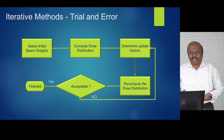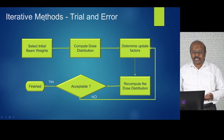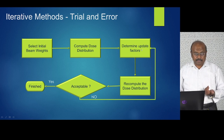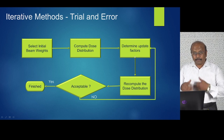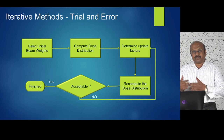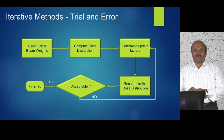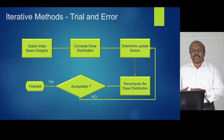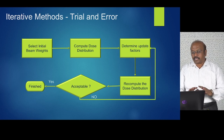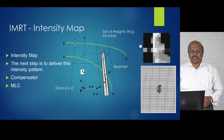The iterative method works like this: you initially take some weights, compute the dose distribution, determine the update factors, then recompute the dose distribution. If it is acceptable, you finish; otherwise you update it and repeat. It's iterative until you get the minimum cost function. You keep doing it until you say it is acceptable, then stop.